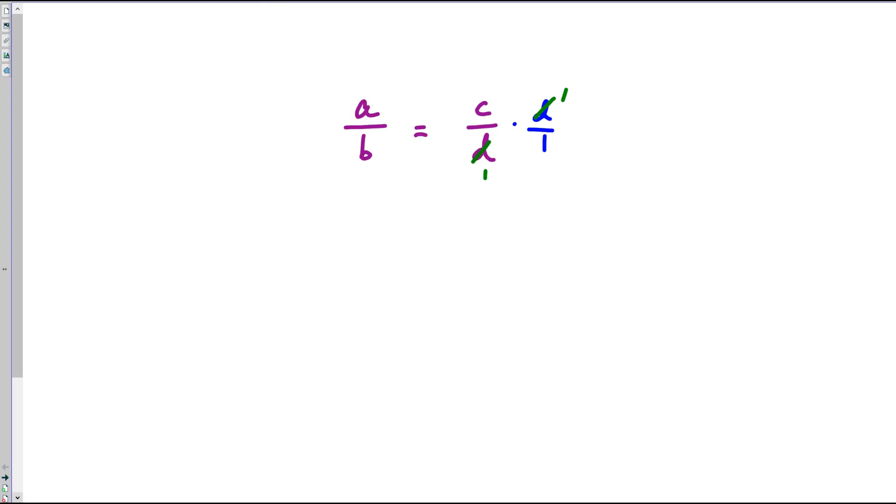If we do the same process, we could see that if we wanted to cancel out c and move it to the other side, well, we would have to multiply by 1 over c, and now c divided by c is equal to 1 over 1. So c started in the numerator, and then it moved down into the denominator.